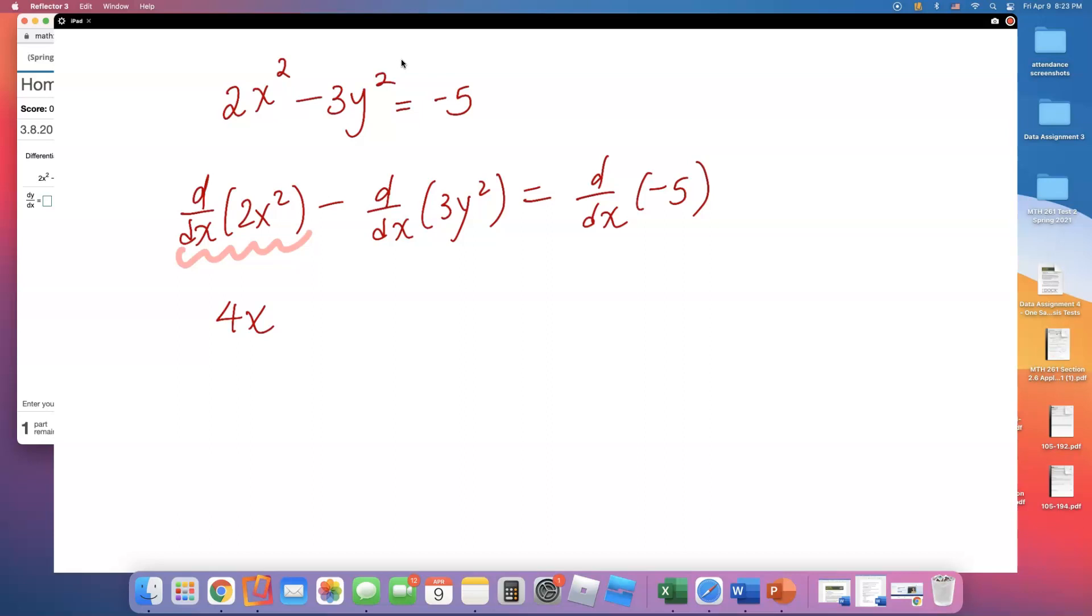But the second term, this is going to be minus, minus because of that minus sign, 6y times dy/dx. And on the other side, it's simply going to be 0.